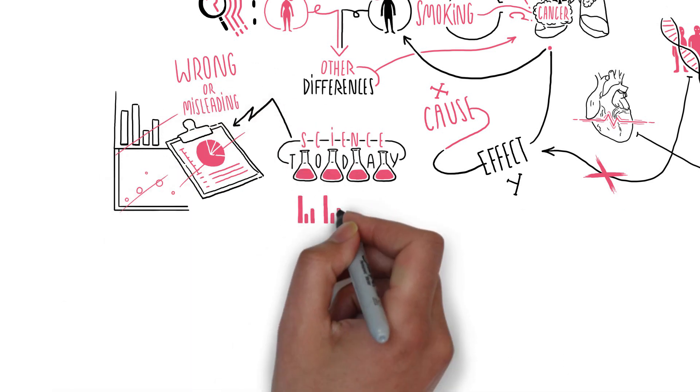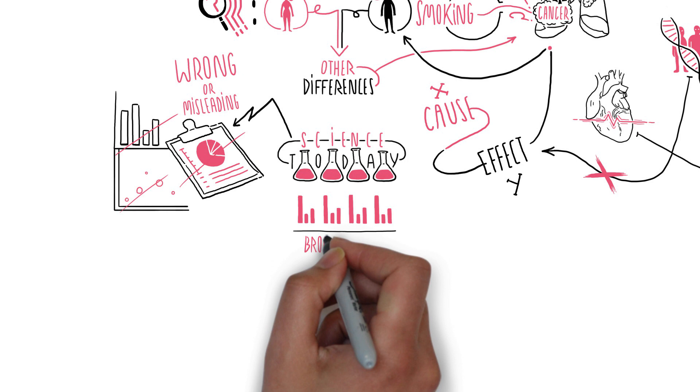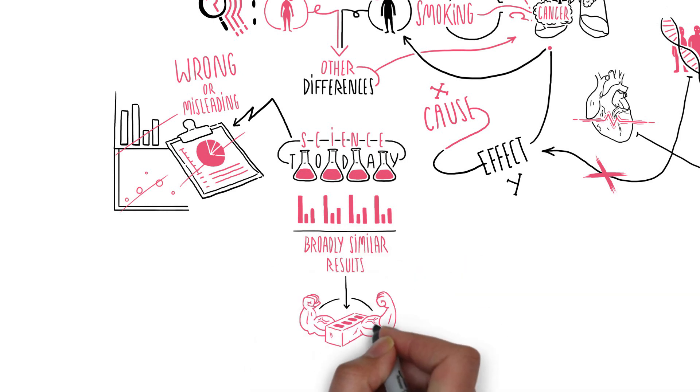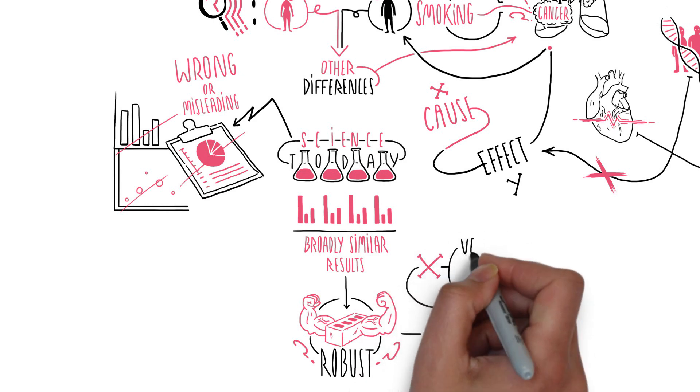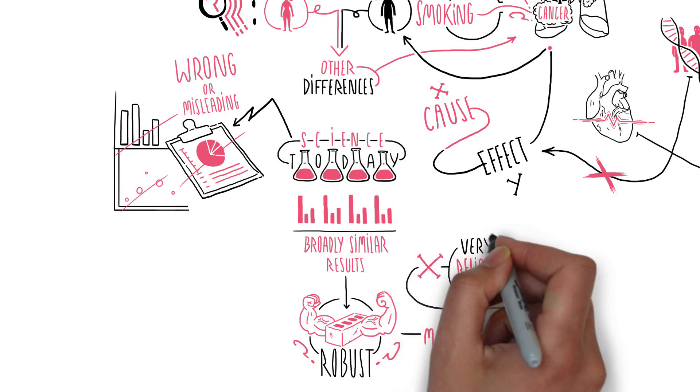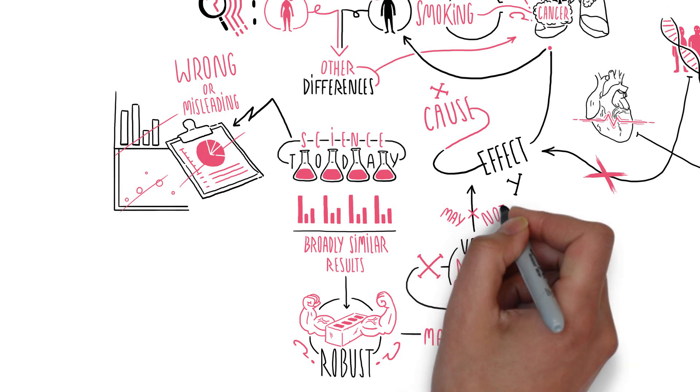If we took more care to repeat our studies, to check that we get broadly similar results each time, then surely our findings would be more robust. Perhaps, but a robust finding may still be wrong. X and Y may be very reliably correlated, but may not reflect a cause and effect relationship.